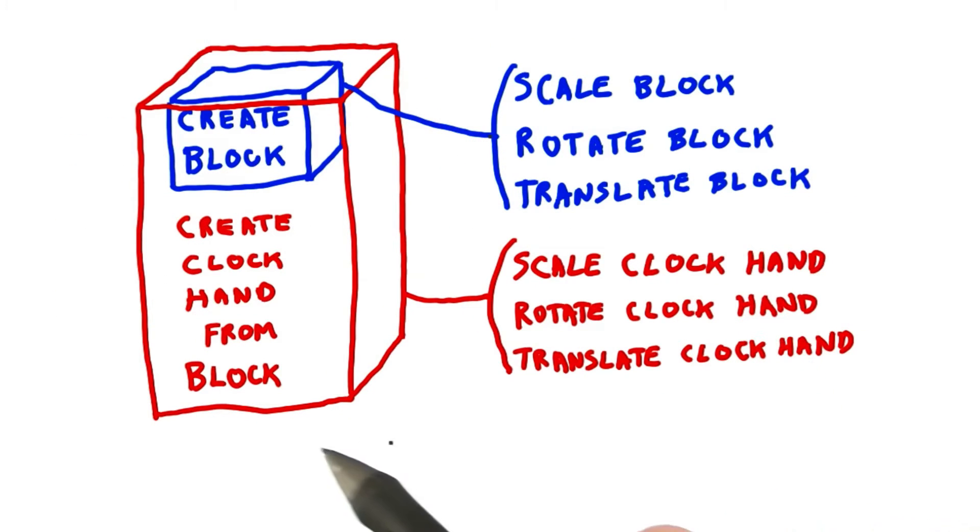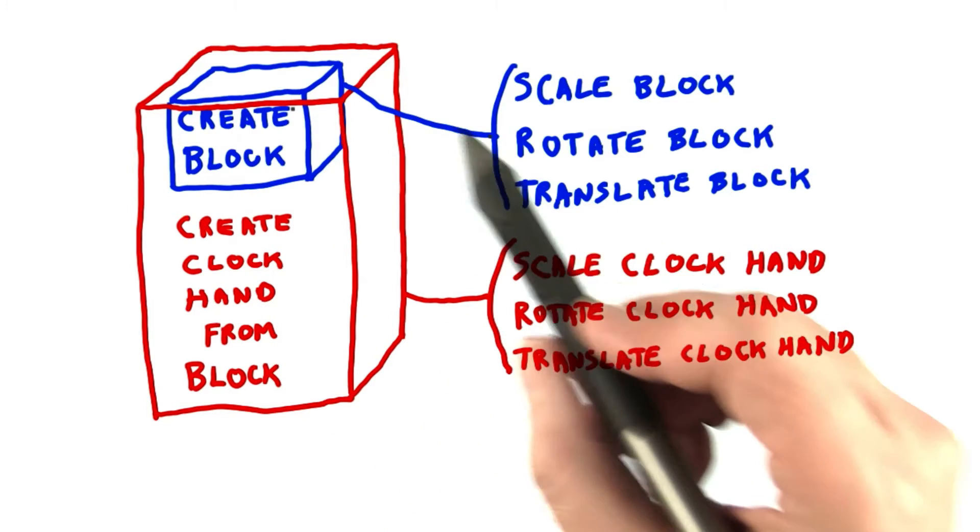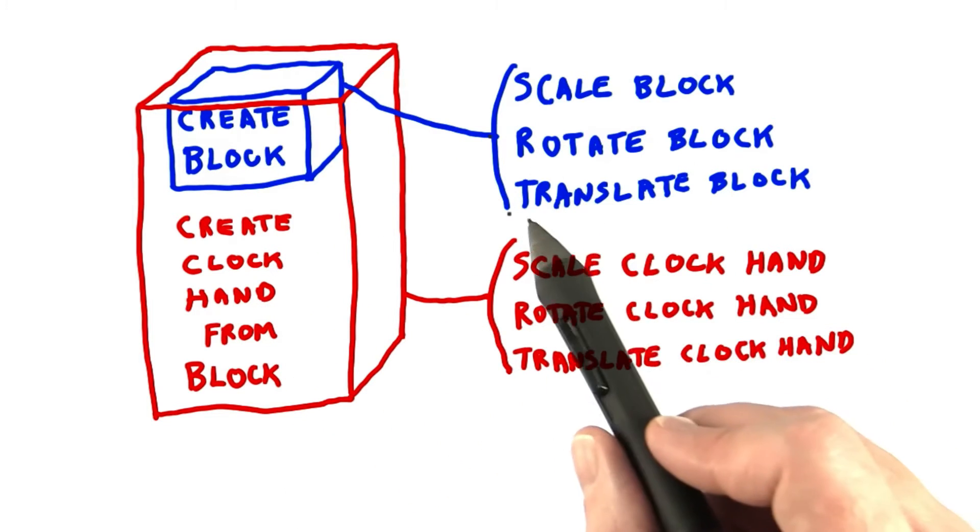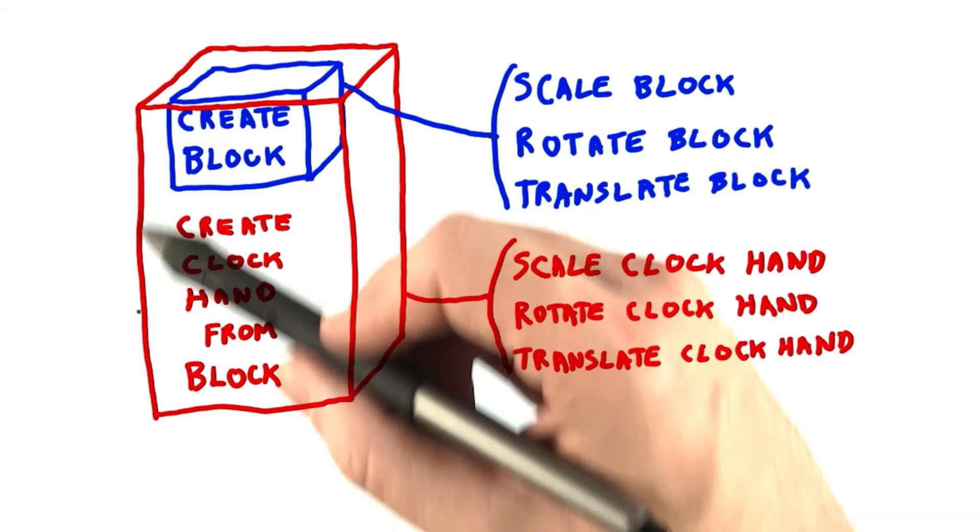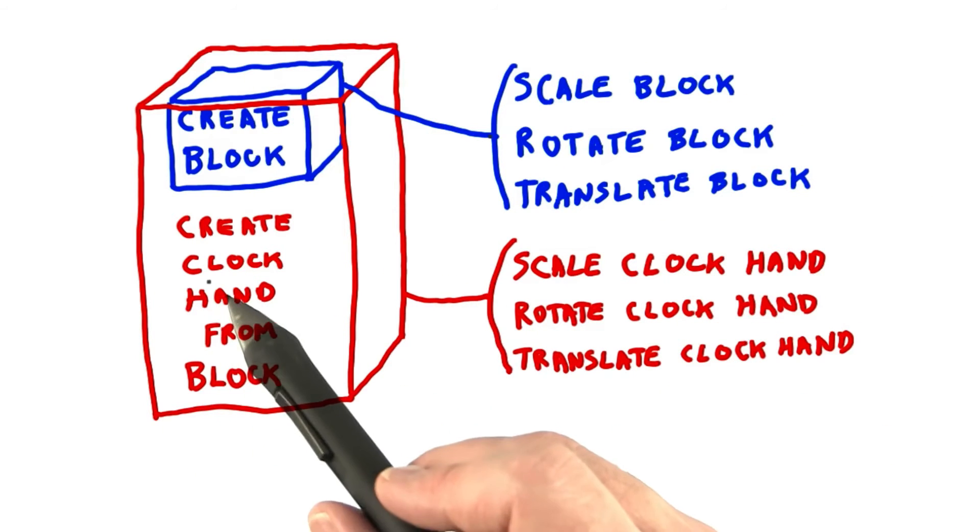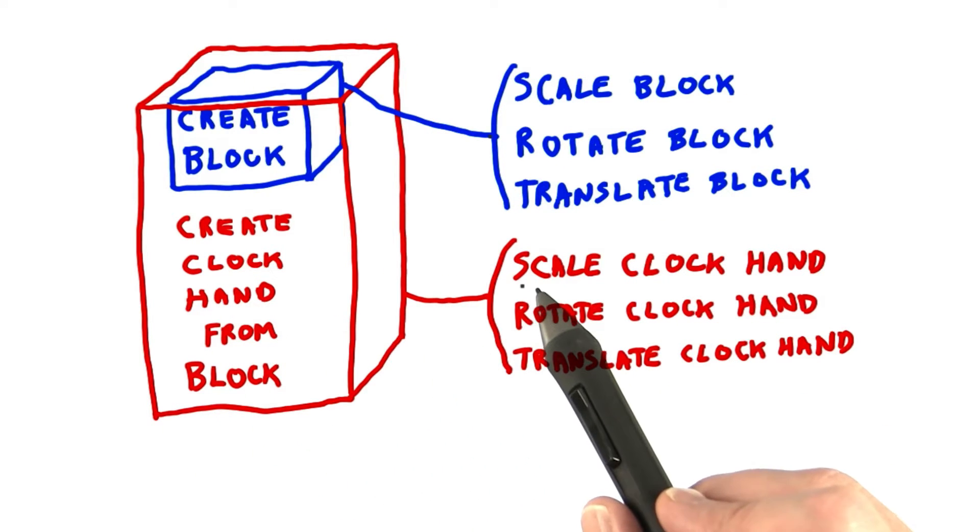Here's a conceptual diagram of the whole idea. We create a block and we can scale, rotate, and translate that block. Then by putting it inside an Object3D called the clock hand, we get an additional scale, rotate, and translate that we can apply.